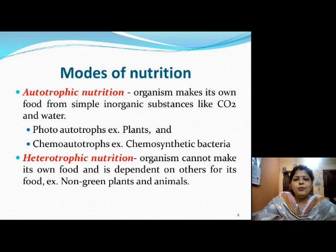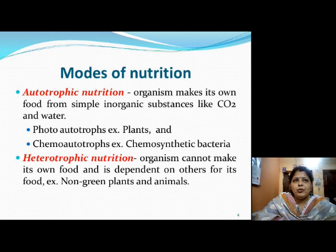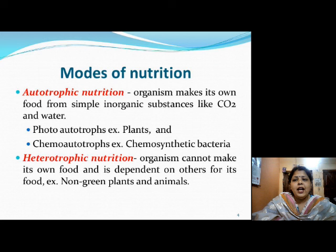After this, modes of nutrition. There are mainly two modes of nutrition: autotrophic and heterotrophic. Autotrophic nutrition is made up of two words — auto and trophos. Auto means self, trophos means nutrition. So organism which makes its own food from simple inorganic substances like carbon dioxide and water is known as autotrophic nutrition.